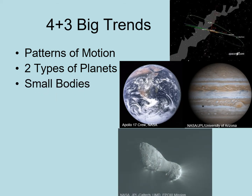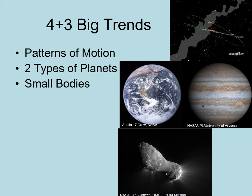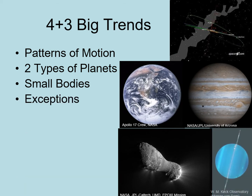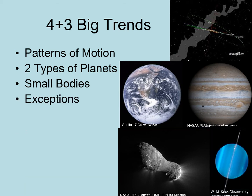Third, we have the abundance of small bodies in the solar system. Finally, there are several planets that seem not to fit the patterns. In addition to these trends, there are three more observations that are worth keeping in mind as we discuss the formation of the solar system.